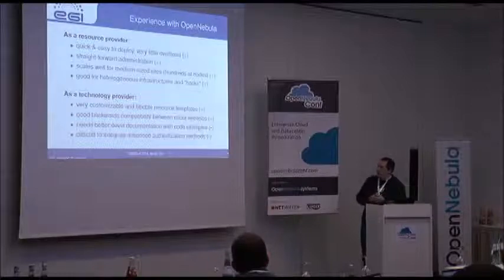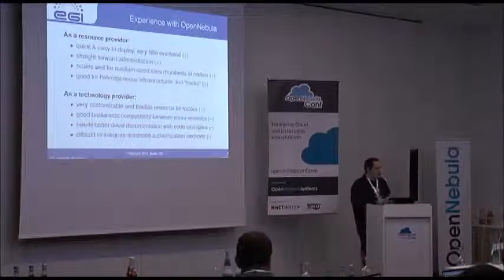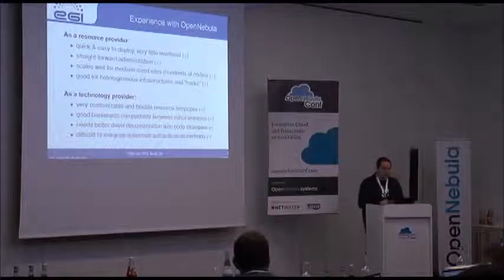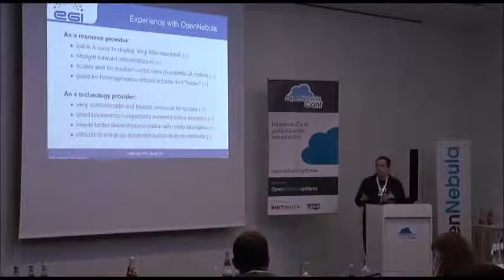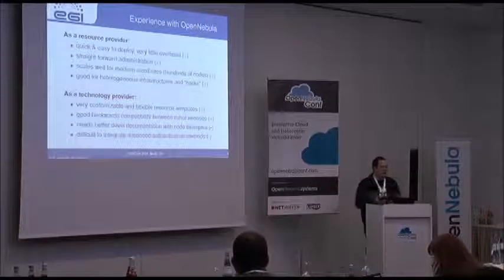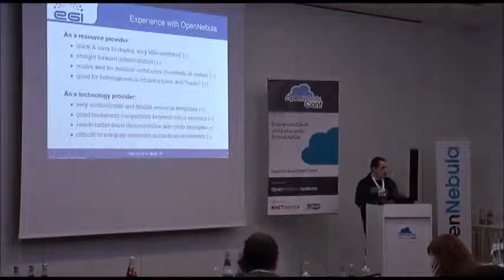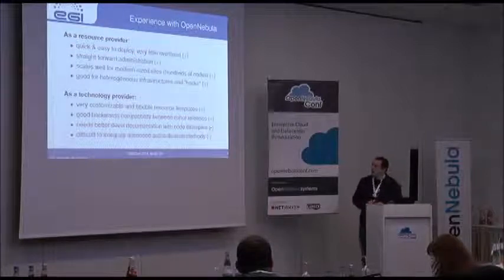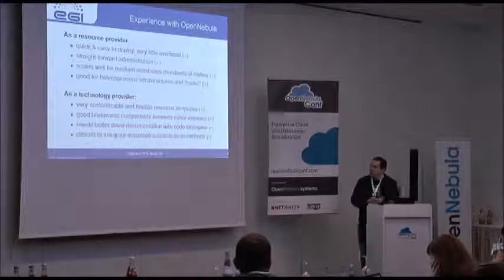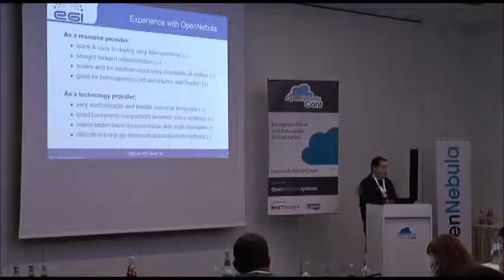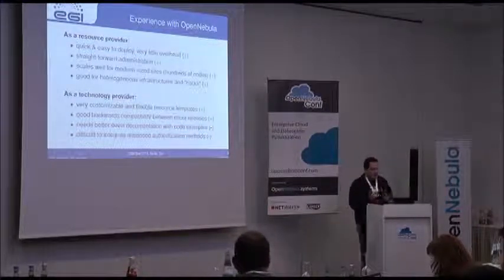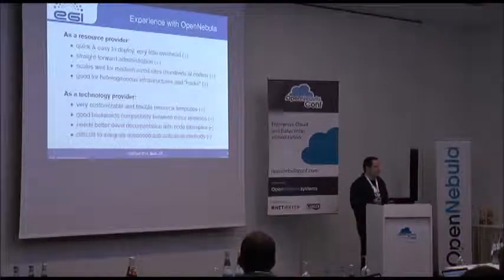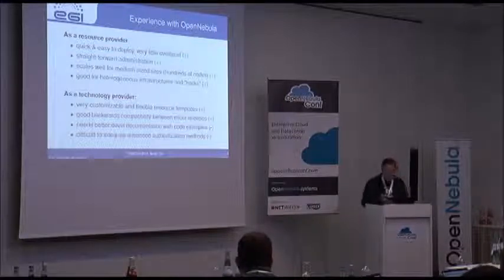What is a little bit sad is that the developer documentation would need some code examples, because in the beginning it's quite difficult to understand how it all works and how to use the libraries OpenNebula provides in Ruby or Java, since these libraries are quite low-level and provide access to underlying XML. Some nice examples of actual usage outside of existing clients would be helpful. Also, as we mentioned yesterday during the hacking session, it's sometimes difficult to integrate advanced authentication methods.